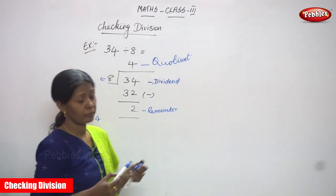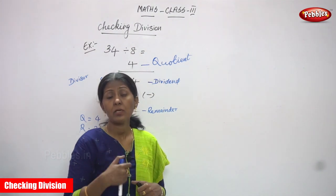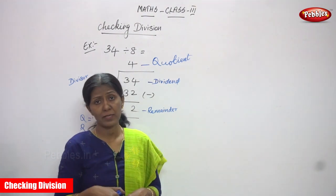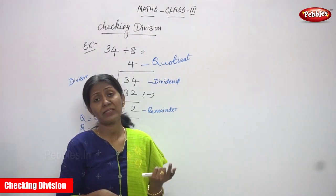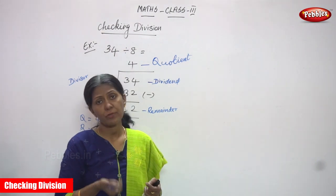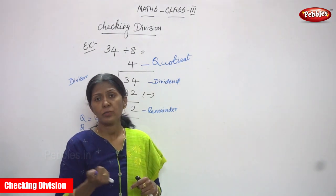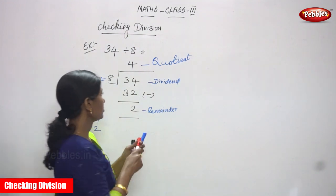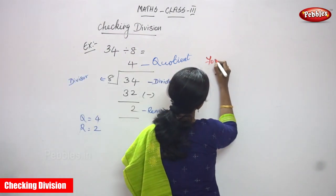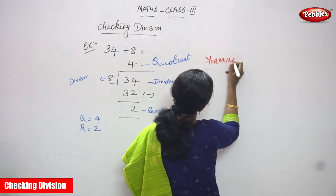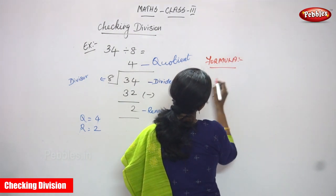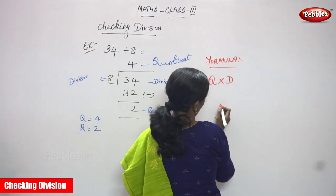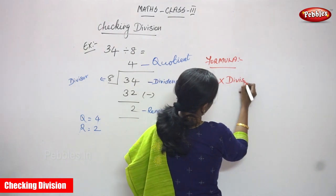So you must know whether the answers you find out — that is the quotient and remainder — are right or wrong. That is what you are going to do in checking division. You must use a formula. I will tell you the formula. The formula is: quotient multiplied into divisor.